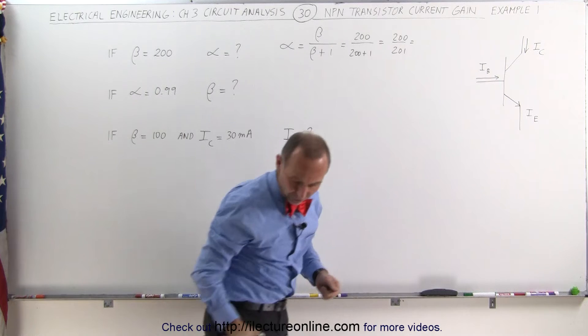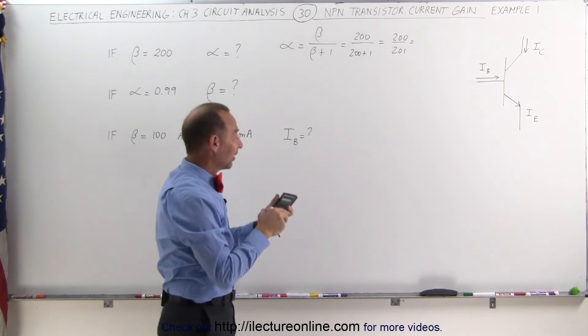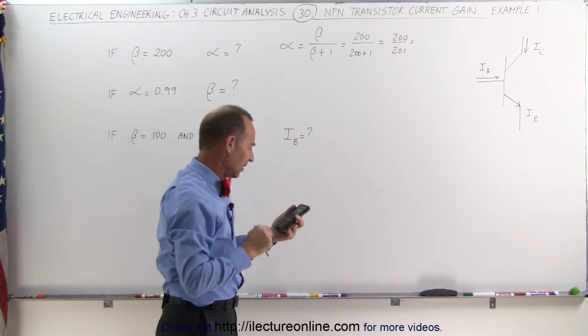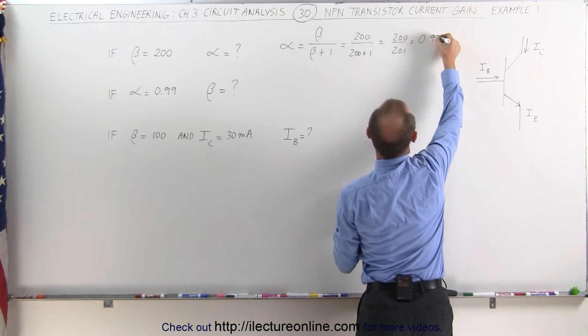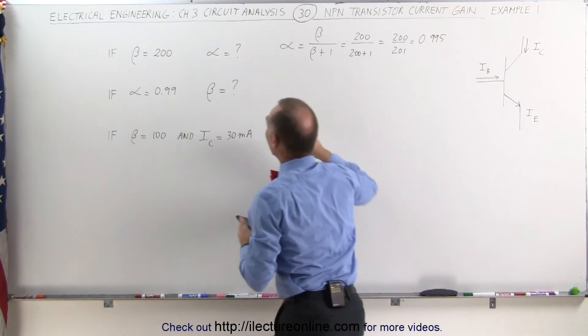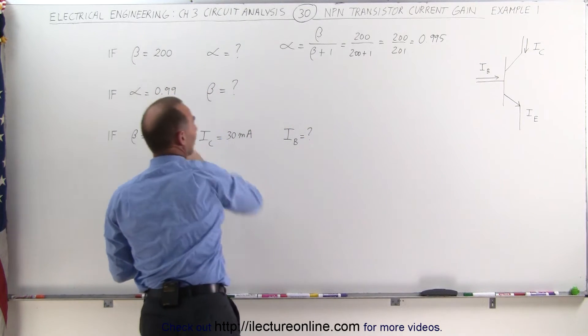And just to make sure we get this correct, 200 divided by 201 is, yes indeed, it's 0.995.